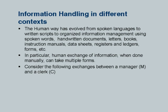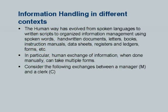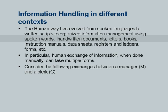I would like to spend some time on the three different contexts which I mentioned. Consider the human way of exchanging information or data. It has evolved from spoken languages to written scripts to organized information management using spoken words, handwritten documents, letters, and books. Even before computers came, the engineering discipline was well understood — there were instruction manuals, data sheets. In business, people used registers; teachers use attendance registers; bankers use ledgers; there are application forms for various things. Nowadays all of these systems are computerized.